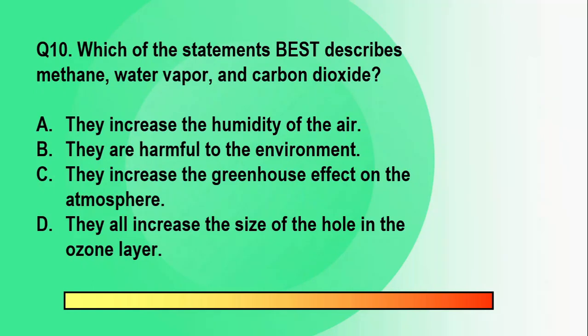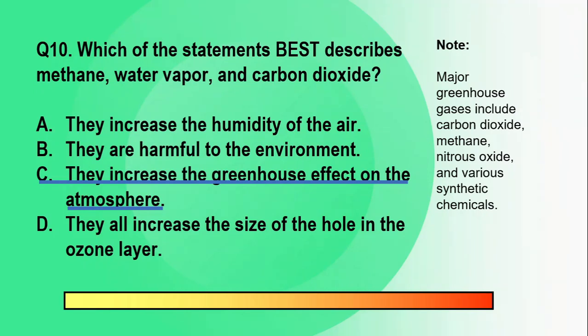The correct answer is letter C. They increase the greenhouse effect on the atmosphere. Major greenhouse gases include carbon dioxide, methane, nitrous oxide, and various synthetic chemicals. Note also that although water vapor accounts for 60-70% of the greenhouse effect and carbon dioxide accounts for only 25%, the temperature of the Earth's atmosphere is actually controlled by carbon dioxide and the other greenhouse gases.